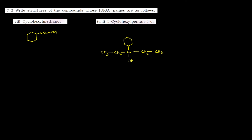Second last part: cyclopent-3-en-1-ol. Cyclopent matlab 5 carbon atoms ki ring. Yeh banayenge aapne. Isme kya hai — 1 position par hai -ol, matlab first position par hai OH group. Toh kahin par bhi laga sakte hain; jahan OH group lagaya wahi first position. Yeh second aur yeh third. Third position par kya hai — pent-3-en — matlab third position par hai ek double bond. Toh yeh aapne banaya double bond. Toh yeh kya ban gaya — cyclopent-3-en-1-ol. Clear, simple sa tha.